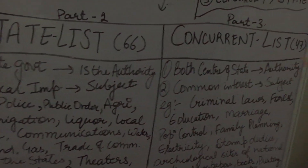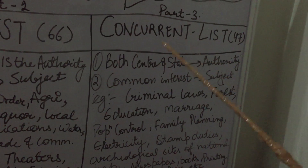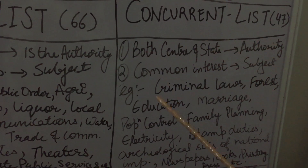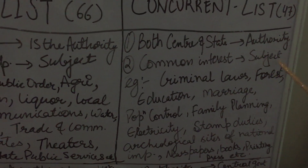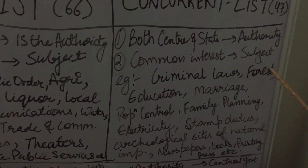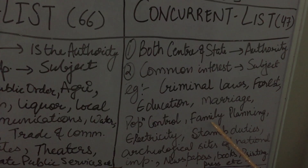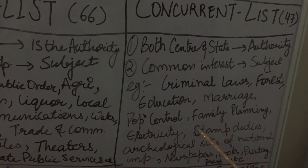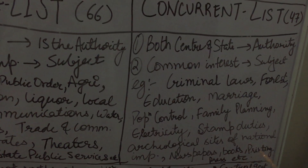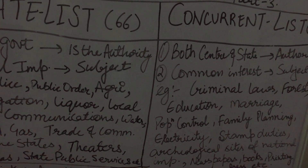Moving ahead to the concurrent list. Here we have 47 subjects. Concurrent list woh hai jahan dono center aur state milkar decision lete hain — authority dono ki chalti hai. Kaun se subjects yahan discuss honge? Common interest wale — jaise criminal laws, forest, education, marriage, population control, family planning, electricity, stamp duties, archaeological sites of national importance, newspaper, books, printing press, etc.